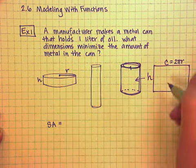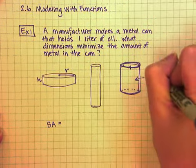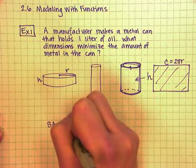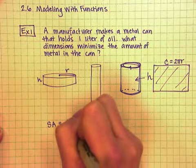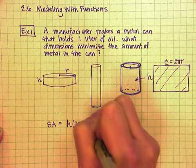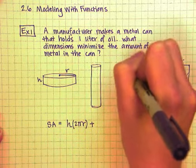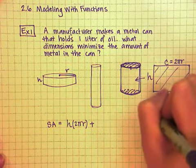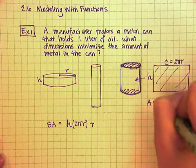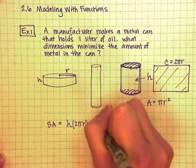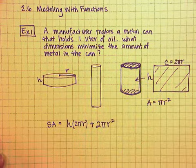So for surface area, the area of this rectangle here is going to be the height times 2πr. And then we're also going to have the surface area from the top of the can and the bottom of the can. The area of a circle is πr². And since we have a top and a bottom, we're going to have 2πr² for our surface area.